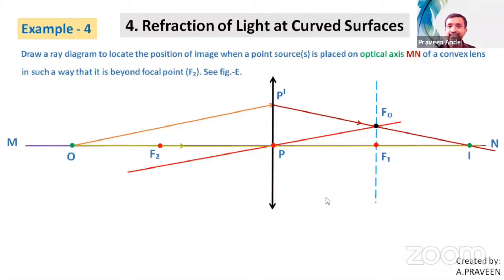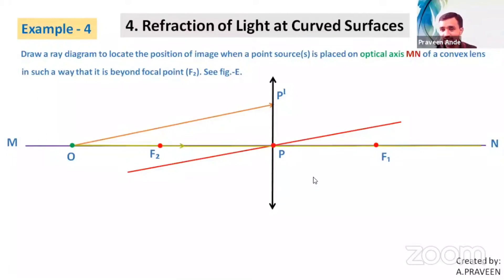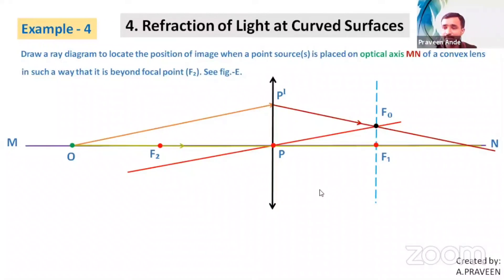So to summarize what was done for this example: first, I drew a parallel line to the given ray OP' through the optic center of the lens. Then I drew a perpendicular line through F1. Where the blue dotted line and the red imaginary principal axis coincide gives the imaginary focus F₀. After refraction, the OP' ray meets F₀, then extends to meet the original principal axis MN — and that intersection is the image point I.